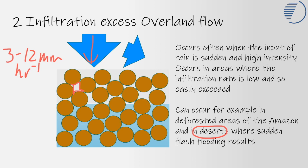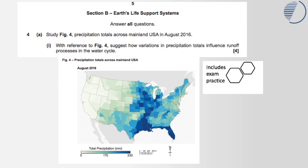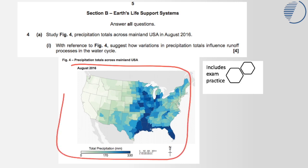That is called infiltration excess overland flow. Study this question — study Figure 4, shown here: 'Precipitation totals across mainland USA in August 2016. Suggest how variations in precipitation totals will influence runoff processes in the water cycle.' We're thinking about what we've just been studying: saturated overland flow, runoff — runoff processes, that's what that should trigger.